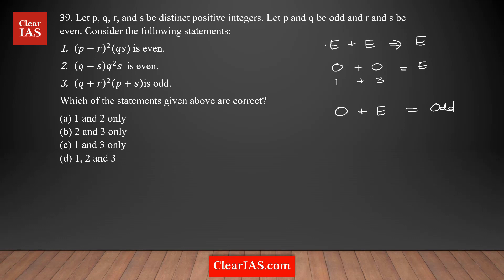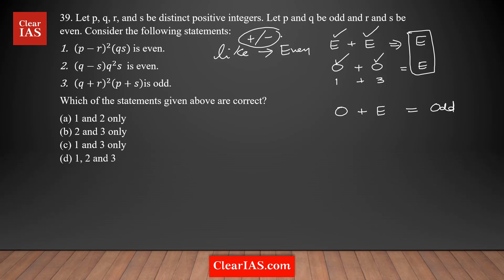You can recognize a pattern here as well. If you're adding like terms — meaning both terms are even or both are odd — the result is always even. This applies to both addition and subtraction. Unlike terms — one odd and one even — when added or subtracted, always give an odd result. Remembering these rules means you don't need to plug in values every time.